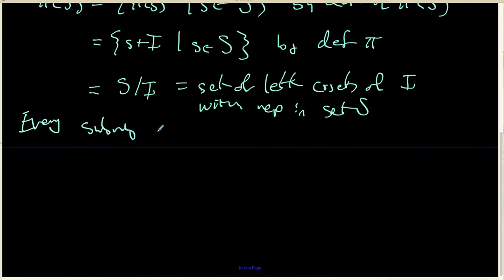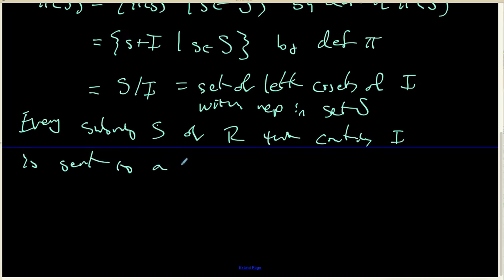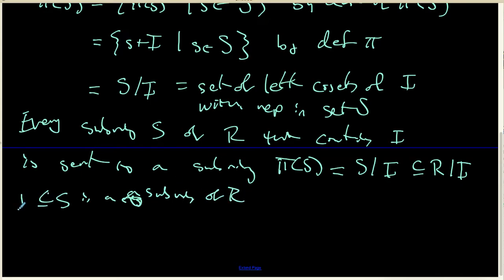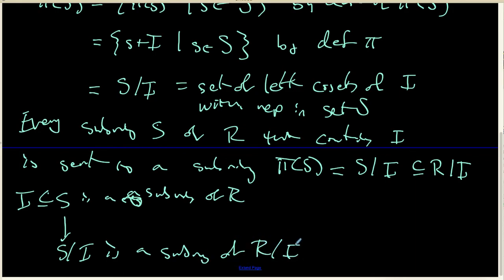So every subring S of our ring R that contains the ideal I is indeed sent to a subring we can call pi of S, and pi of S is now known to be S mod I, which is indeed a subring of R mod I. So we have one direction of our correspondence: S is a subring of R containing I maps down to S mod I is a subring of R mod I.